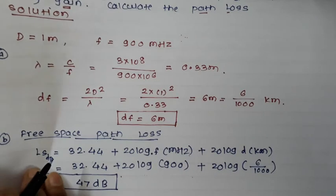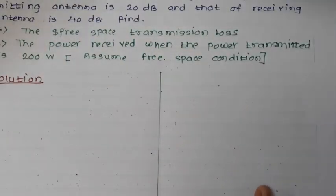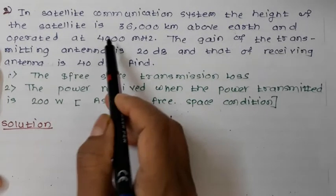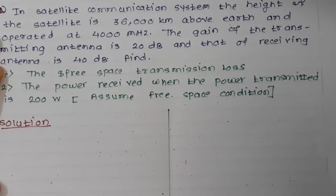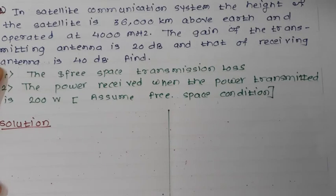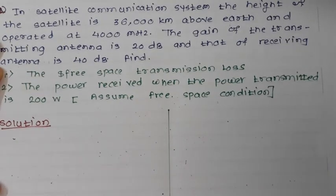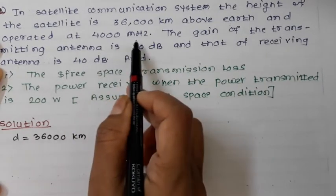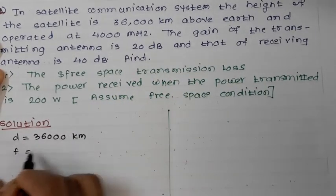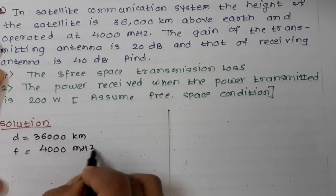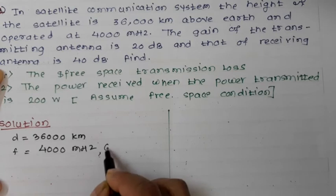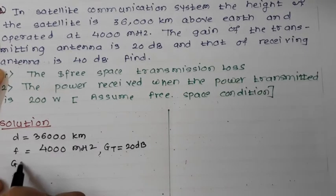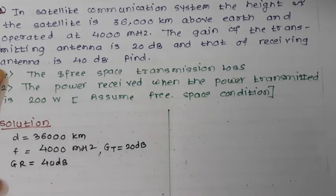The second problem involves a satellite communication system. The height of the satellite above Earth is d = 36,000 km. It operates at f = 4000 MHz. The gain of the transmitting antenna is GT = 20 dB and the gain of the receiving antenna is GR = 40 dB. We are asked to find the free space transmission loss.